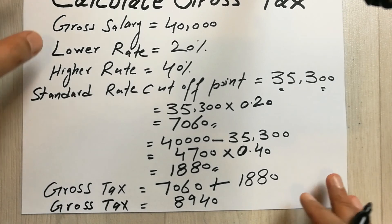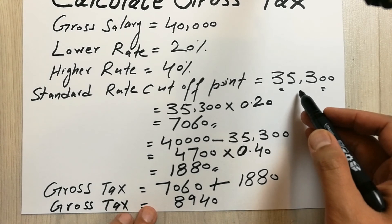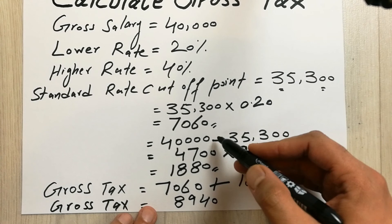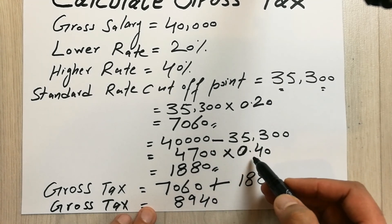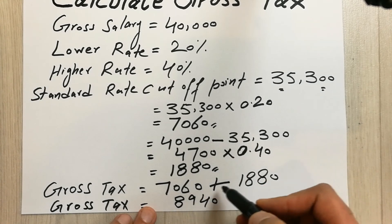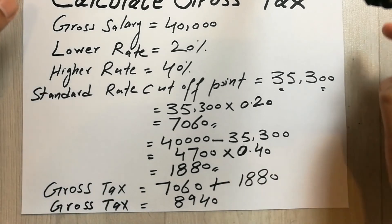You can see what we did is we first calculate the 20% of this value which is the standard rate cutoff point, then we deduct it with the gross salary and then whatever answer we get, we multiply it with the 40%. Then we add both of these values to get our gross tax.